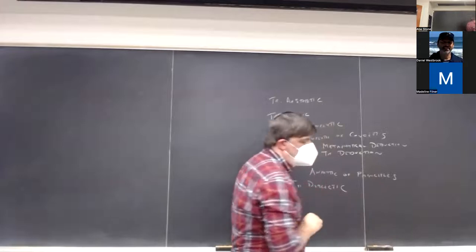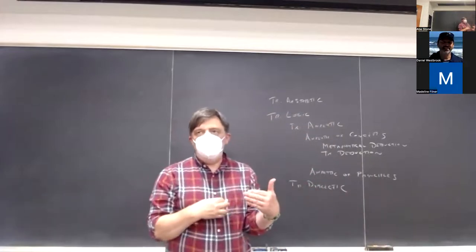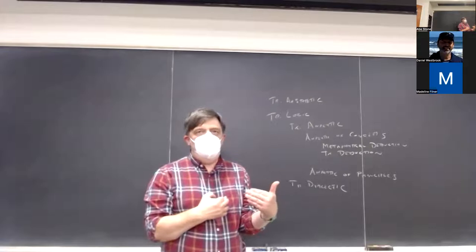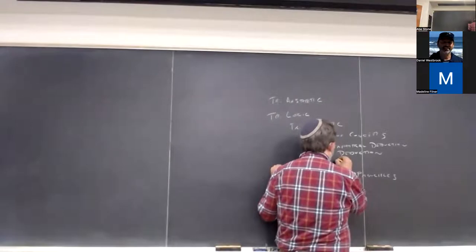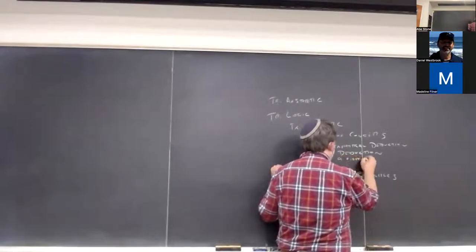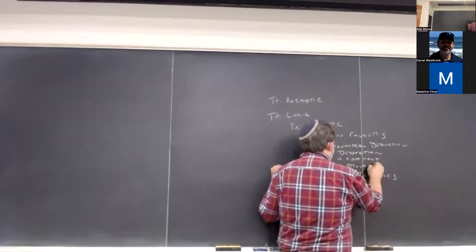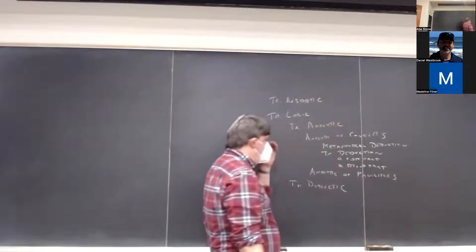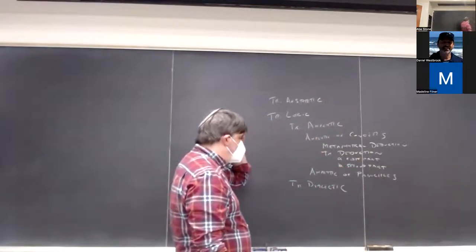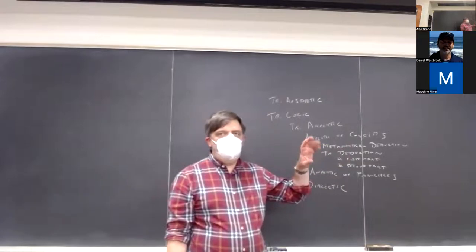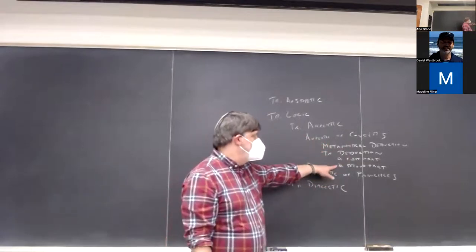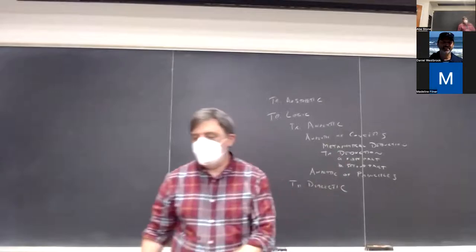Although the transcendental deduction isn't broken down into two parts in the table of contents, I've been saying that it does really have two parts. Last time's reading was the first part, and reading for this time was the second. There are a couple of sections in between that are a transition from the first part to the second.